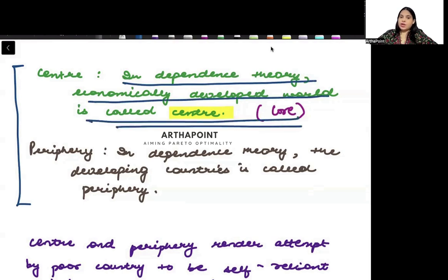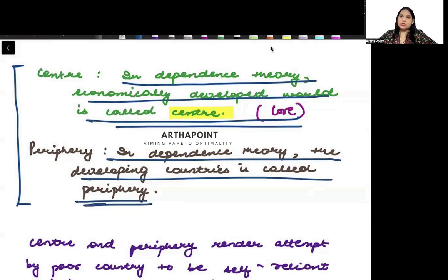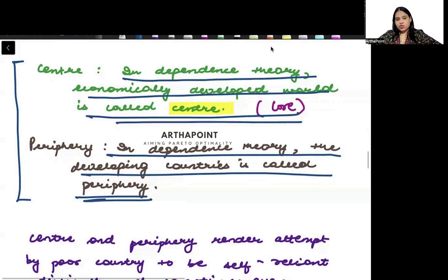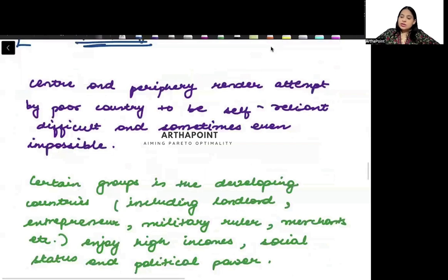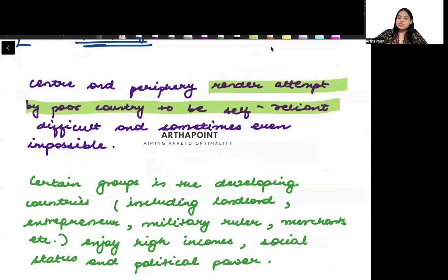In dependence theory, the economically developed world is called center or core. The developing country is called periphery. Center and periphery render attempts by poor countries to be self-reliant difficult and sometimes even impossible.